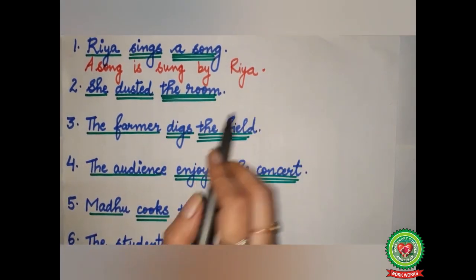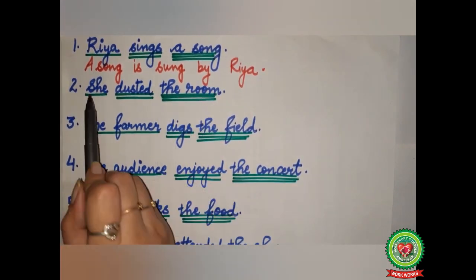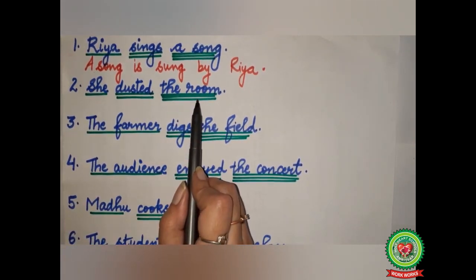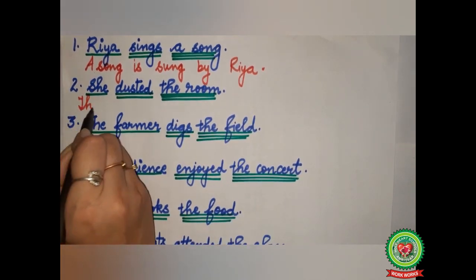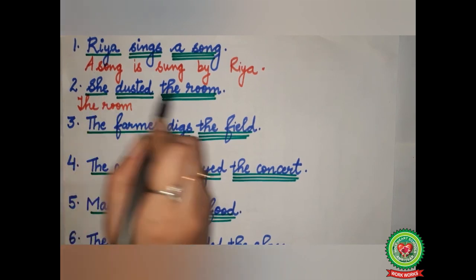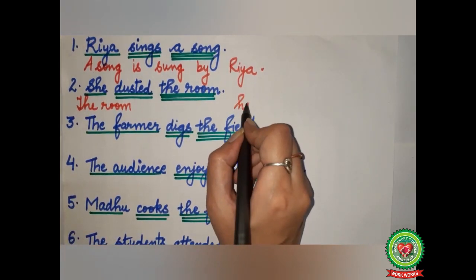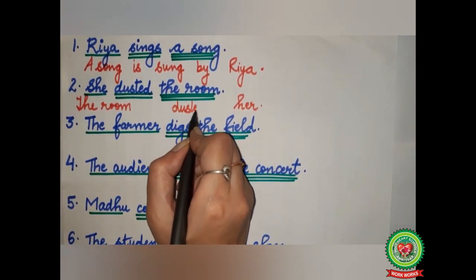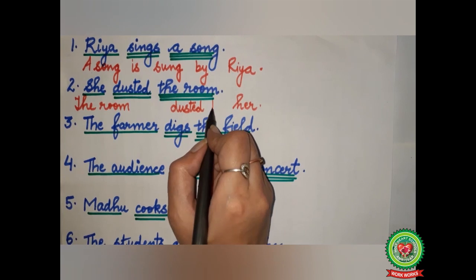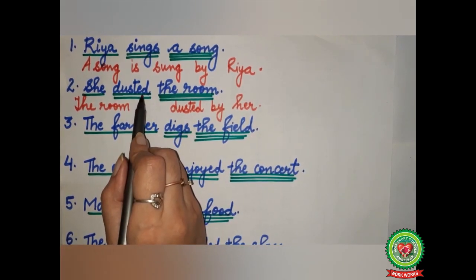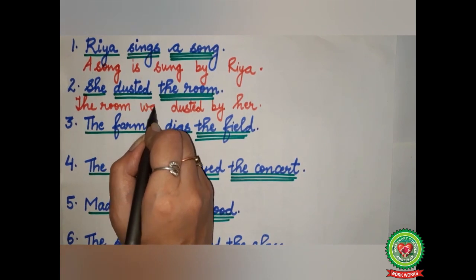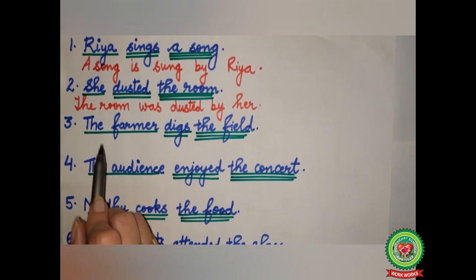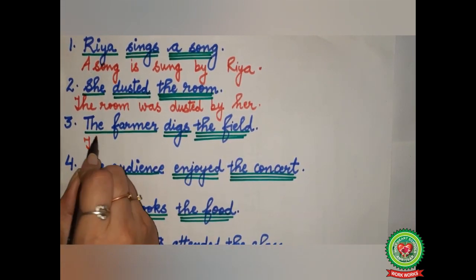Second example: 'She dusted the room.' She — subject, single underline. 'Dusted' — double underline. The room — object, triple underline. The room will come in the beginning, 'she' will go to the last and become 'her.' 'Dusted' is already in its past participle form so it will remain 'dusted.' Before 'her' we add 'by.' 'Dusted' is past form of verb, so with the room we add 'was.' Answer: 'The room was dusted by her.'